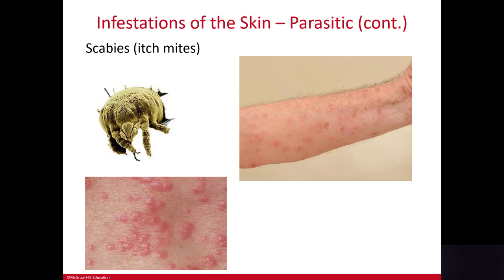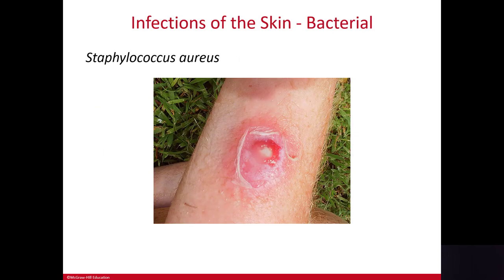Scabies can be transmitted from person to person through prolonged contact — household members, sexual contact, or healthcare workers who spend extended time with an infected patient. Now let's move on to bacterial infections.